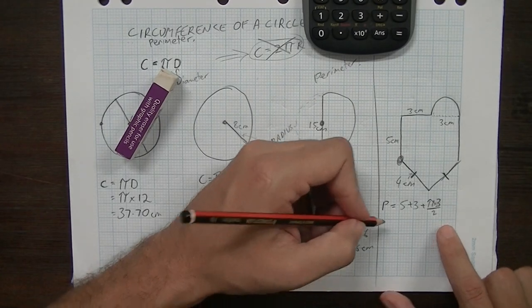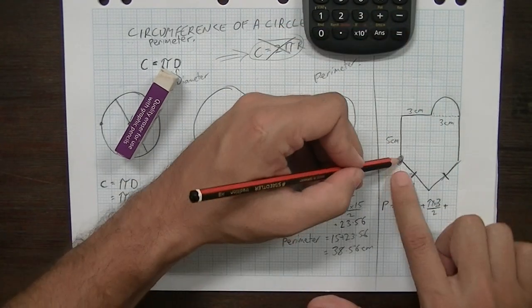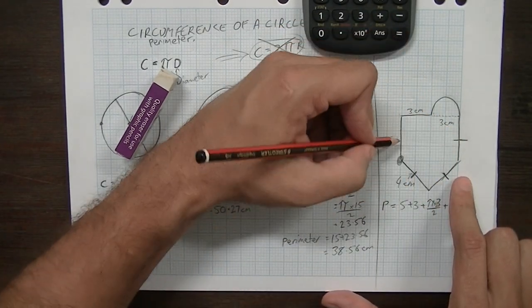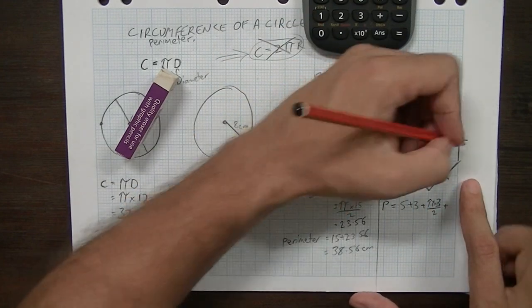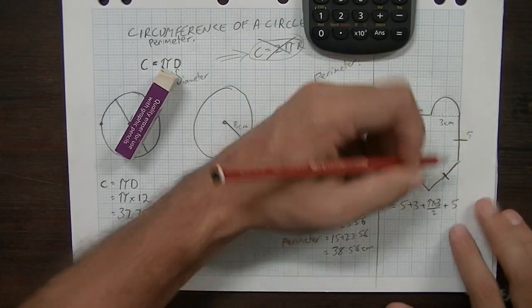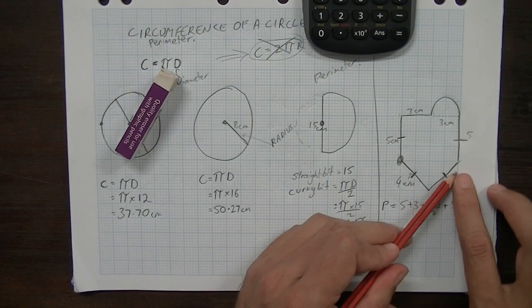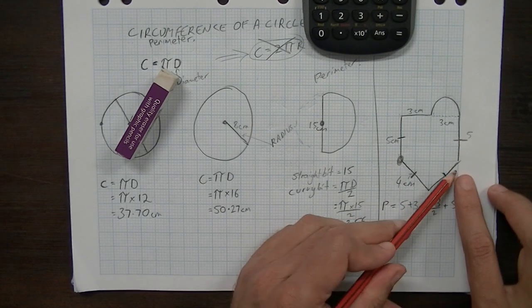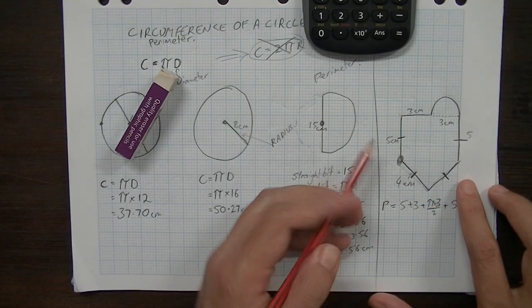So pi times 3 divided by 2 plus... It looks like these lengths are the same. I'll just put those lines in there so we can see that. So that's a 5, so plus 5. And we can see that these bits of that triangle are the same length as well. So 4 and 4.